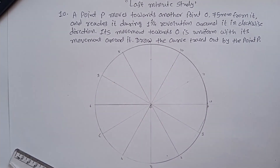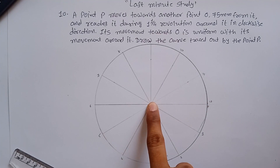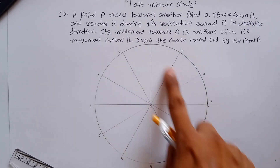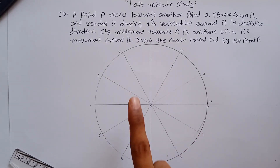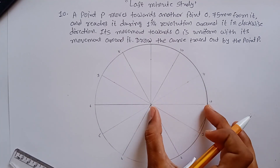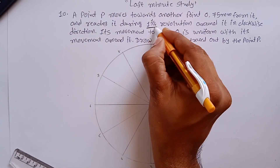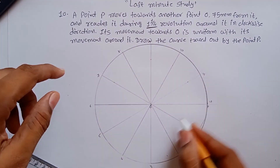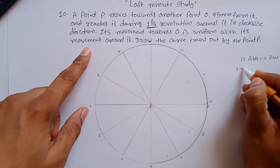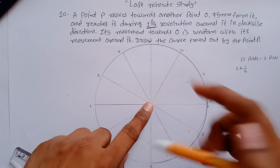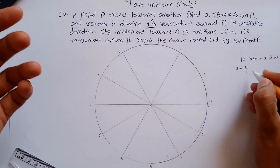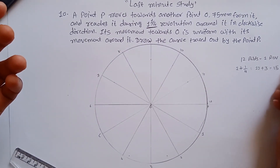Label up to 11 and the last point is 12. Now P point is moving towards O, so you have to divide this line into the same number of parts — which is 12 for one revolution. But in your case it is one and one-fourth revolution. One revolution equals 12 parts, plus one-fourth revolution equals 3 more parts (since one-fourth of 12 is 3). So 12 plus 3 equals 15 parts — you have to divide this line into 15 equal parts.